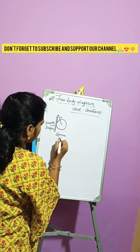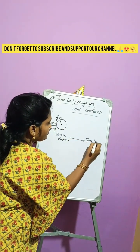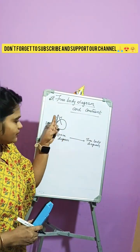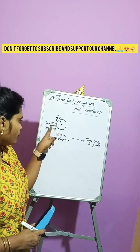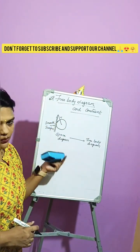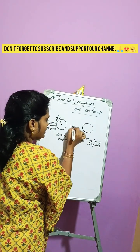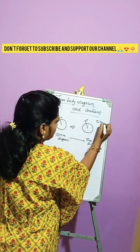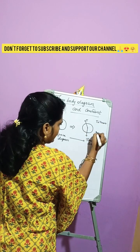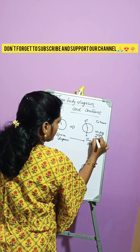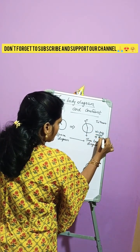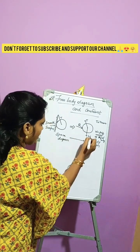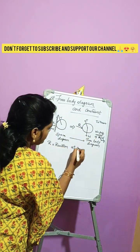So what do you mean by free body diagram is the diagram of an object or a body drawn by isolating the body from other bodies which are in contact, and it includes the forces acting on the body, reactions at the contact point, and self weight indication in the diagram. So the free body diagram consists of the forces, reactions at the contact point, and the self weight on the diagram.